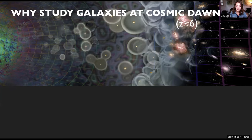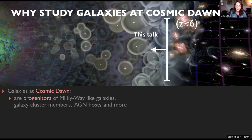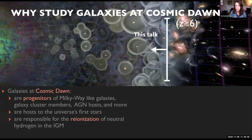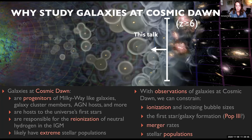Why do I want to study galaxies at cosmic dawn — which for the purposes of this talk is redshift six and above? To me, they're the first chapter of the story of galaxy evolution. They're the progenitors of every type of galaxy that we see today, including the Milky Way. They're the hosts to the universe's first stars. They're responsible for the re-ionization of neutral hydrogen in the IGM, and they likely have extreme stellar populations from what we've seen. This makes them good laboratories for studying new mechanisms of star formation that we don't maybe see at lower redshifts.